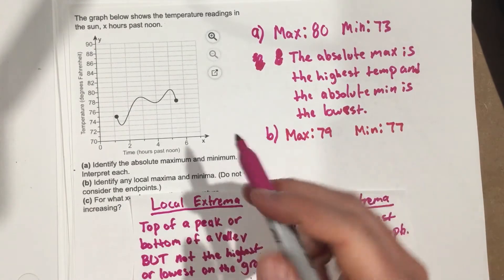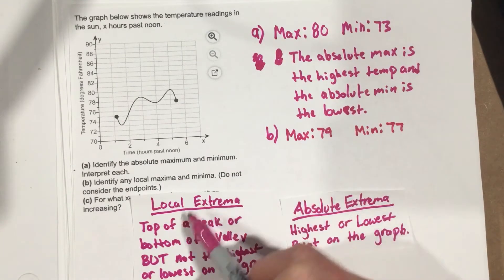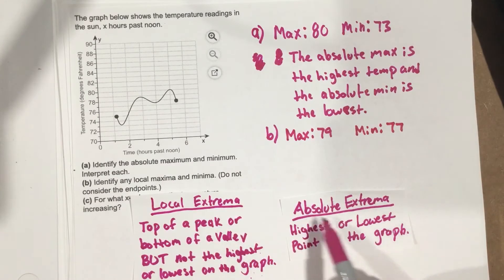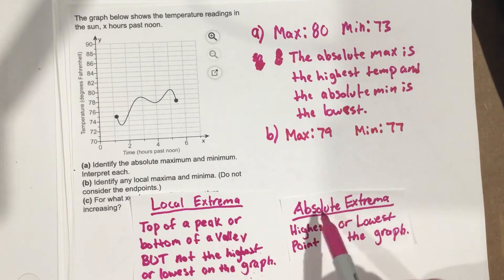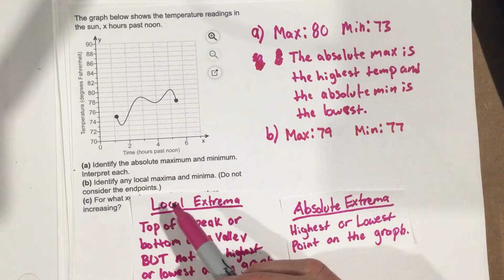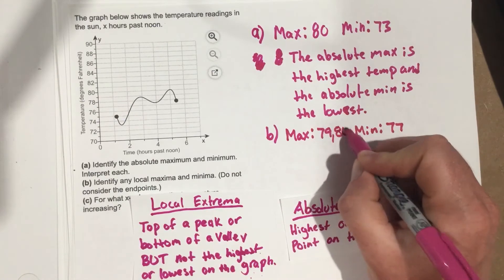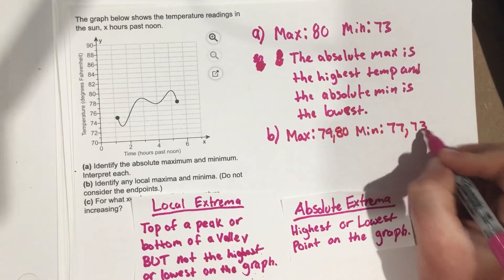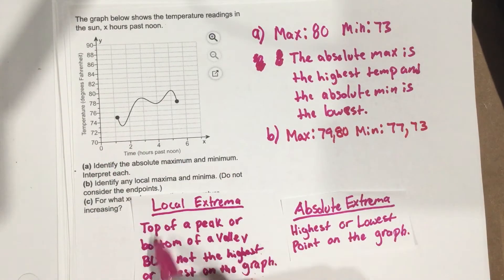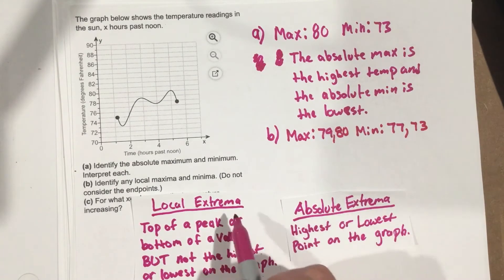Actually, one thing to consider: when talking about local extrema, the local extrema should include the absolute extrema because they're still peaks and valleys. So we should say 79 and 80 for the max, and 77 and 73 for the min. Local extrema include absolute extrema, but absolute extrema don't include local extrema.